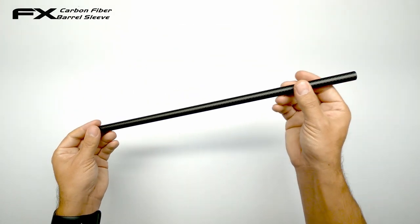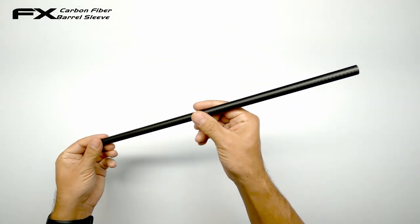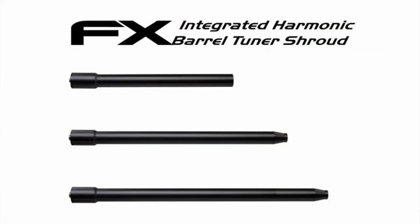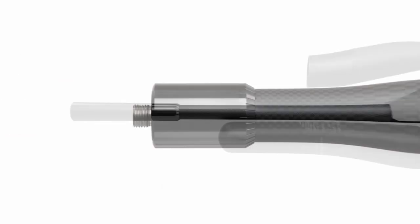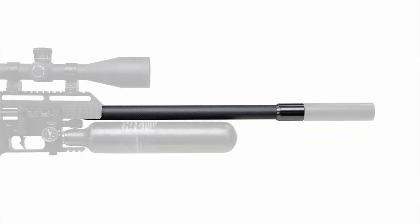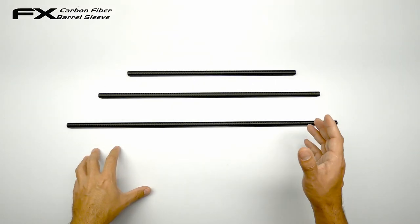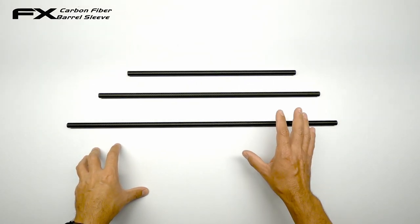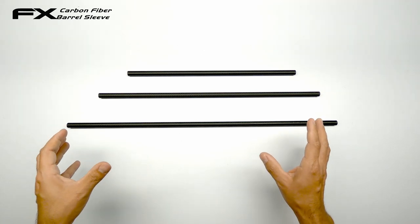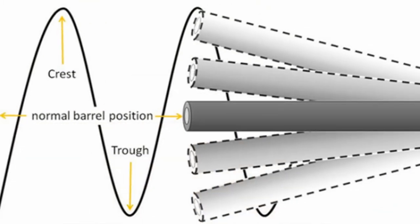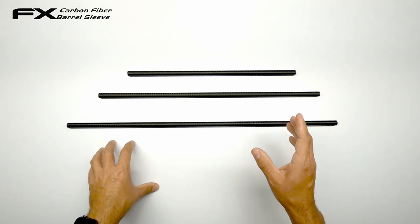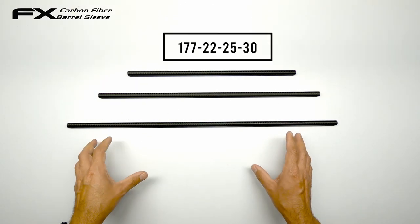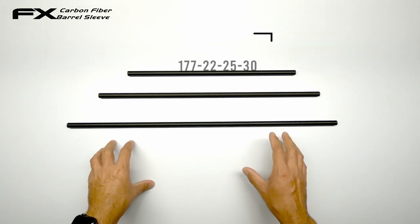FX has announced the carbon fiber liner sleeves a while back together with the harmonic barrel tuner to greatly improve harmonics and therefore accuracy as well. The harmonic barrel tuner isn't regularly available yet, so I'll make a separate video on that item once I get my hands on one. But what I do have today are the carbon fiber liner sleeves to slide over the liners in order to stiffen up the barrel and improve the oscillation of the barrel while shooting. The carbon fiber sleeves are available in all calibers from 177 all the way up to 30 caliber and in different barrel lengths that FX makes.